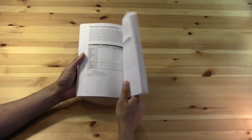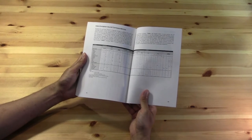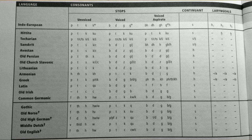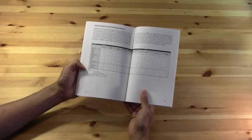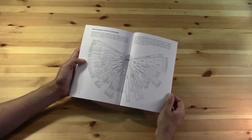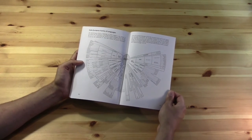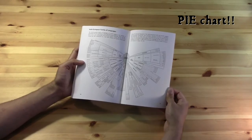And then at the end, a few other useful tables. So Indo-European sound correspondences between the phonology of Indo-European — reconstructed phonology — so what Indo-European sound corresponds to what sound in the earliest recorded forms of the different branches of Indo-European languages. And also a nice little chart of the Indo-European family of languages, in a nice circular arrangement.